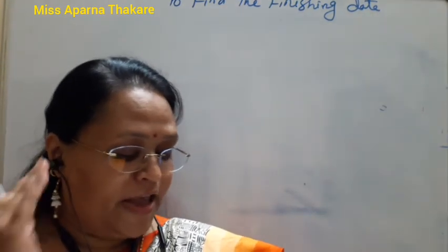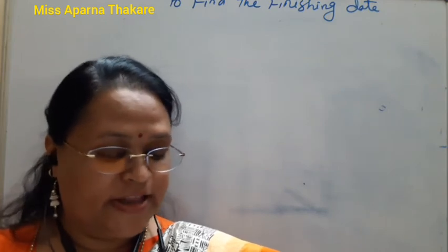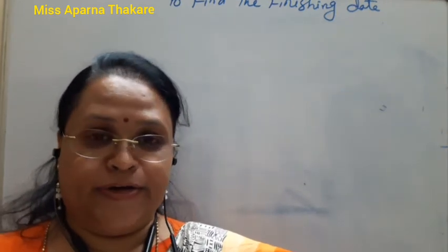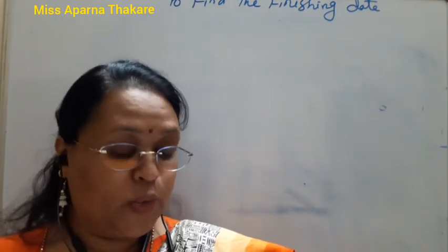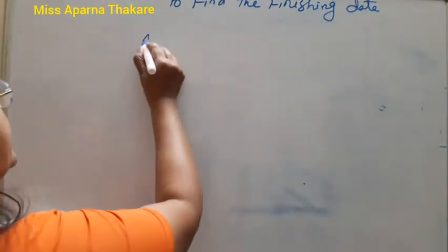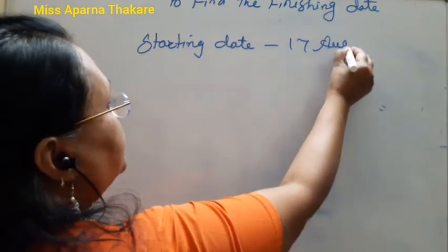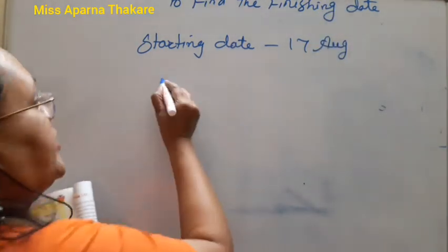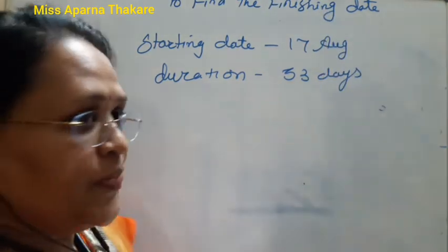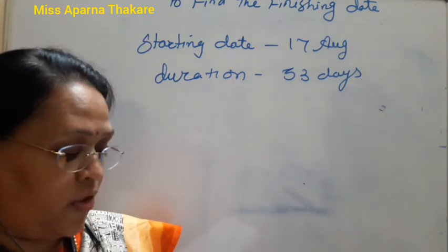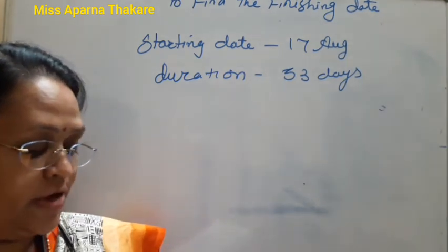Next problem: Sudeen started his training as a Dabbewala on 17th August. He finished 33 days later. On which date did he finish? The starting date is 17th August and the duration is 33 days. So starting date plus duration equals finishing date.